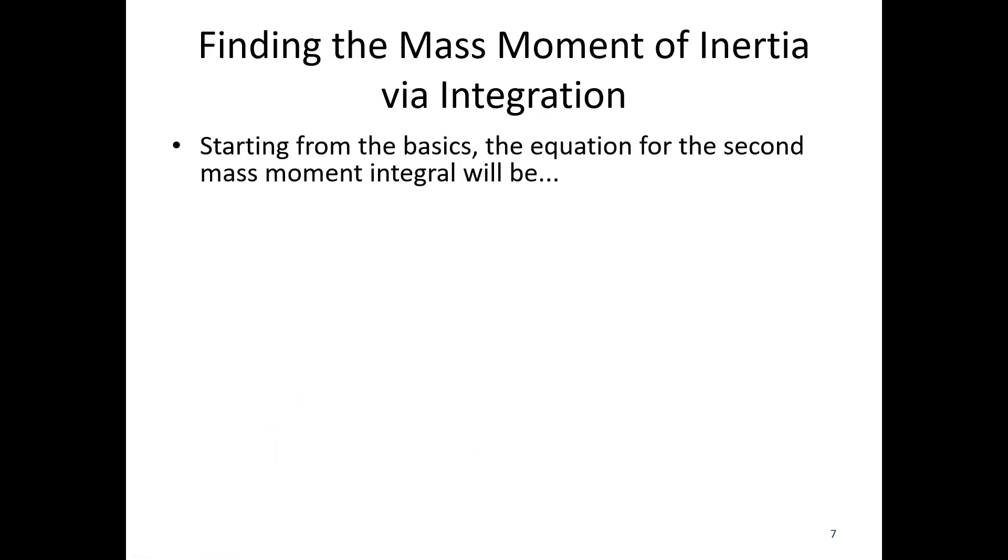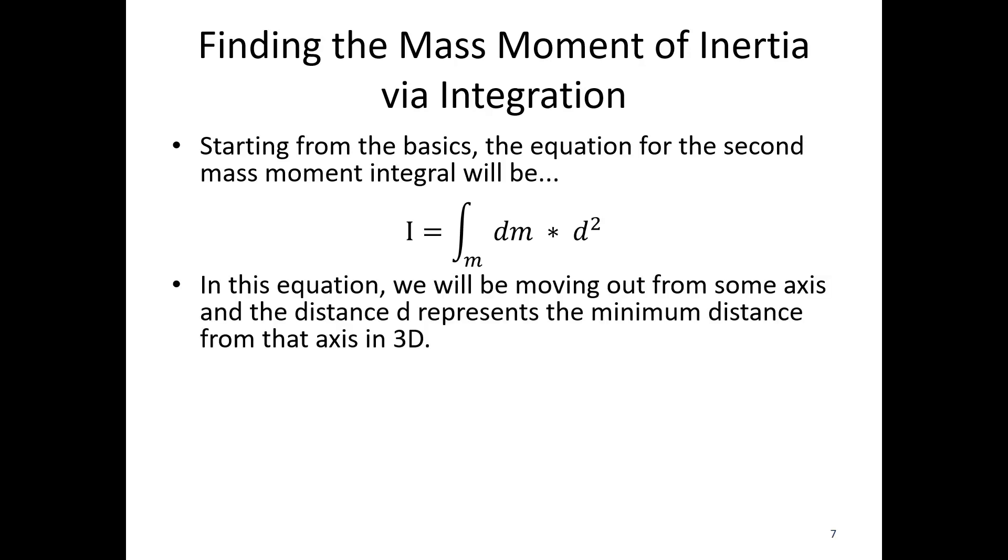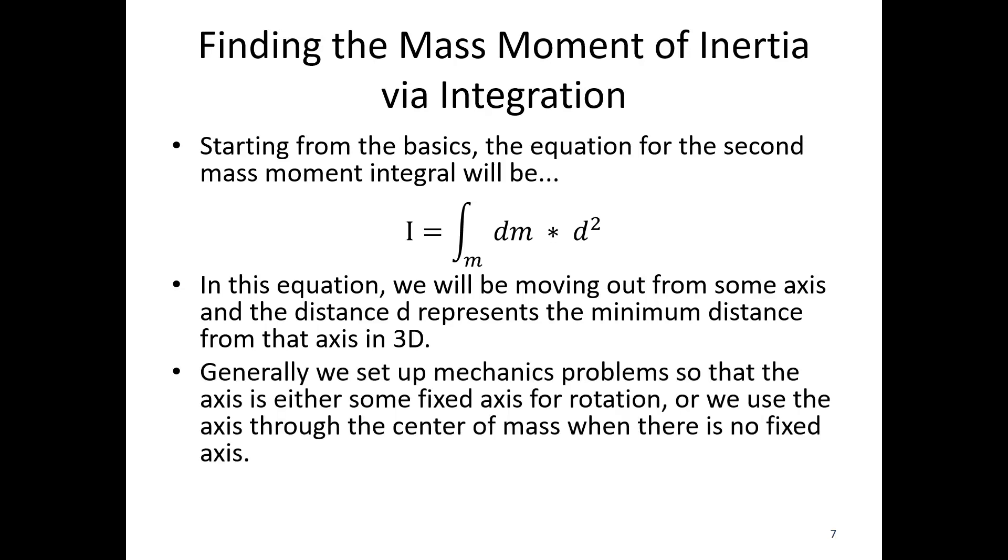So finding this, starting from the basic equation we were just talking about, I is equal to dm times distance squared. In this equation, we'll be moving out from some central axis. d represents the minimum distance from that axis in 3D. So this is going to be similar to the polar area moment integral where we radiate out from some central axis, except now we're in 3D. And we generally set up mechanics problems so that the axis is either some fixed axis for rotation. We're going to use the axis generally through the center of mass or if it's not something like a hinge that is a fixed point. So either the center of mass or some fixed axis like a hinge.